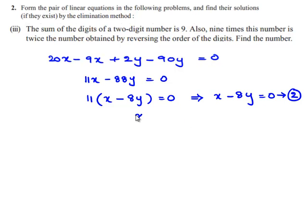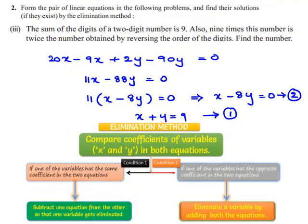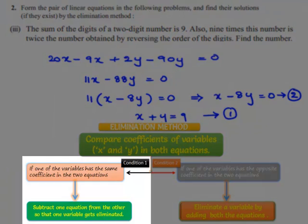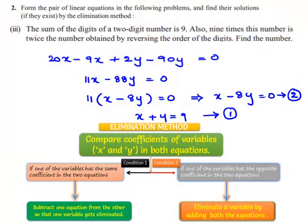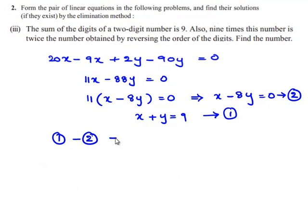The first equation is x plus y is equal to 9. So, in order to obtain the value of x and y by elimination method, we need to subtract equations 1 and 2. First equation minus second equation implies x plus y minus x minus 8y is equal to 9 minus 0.